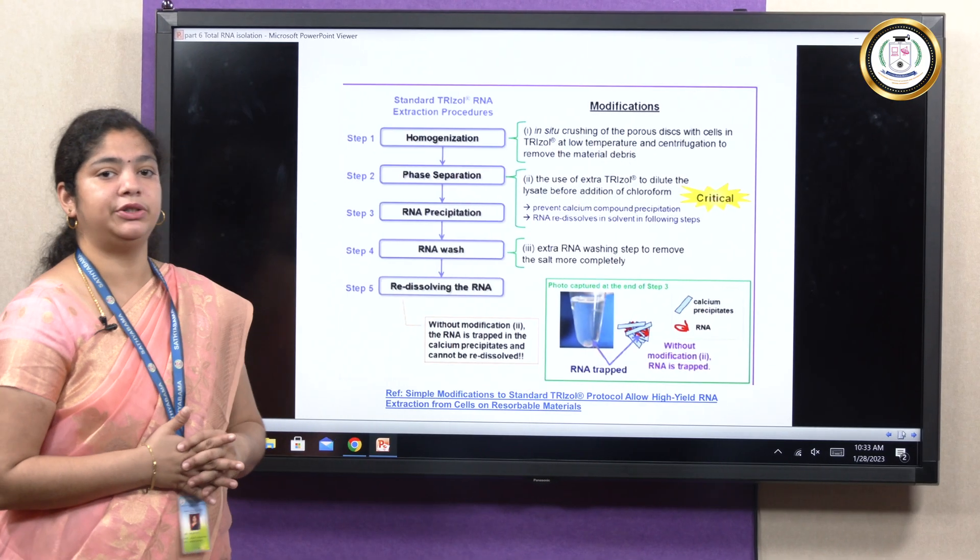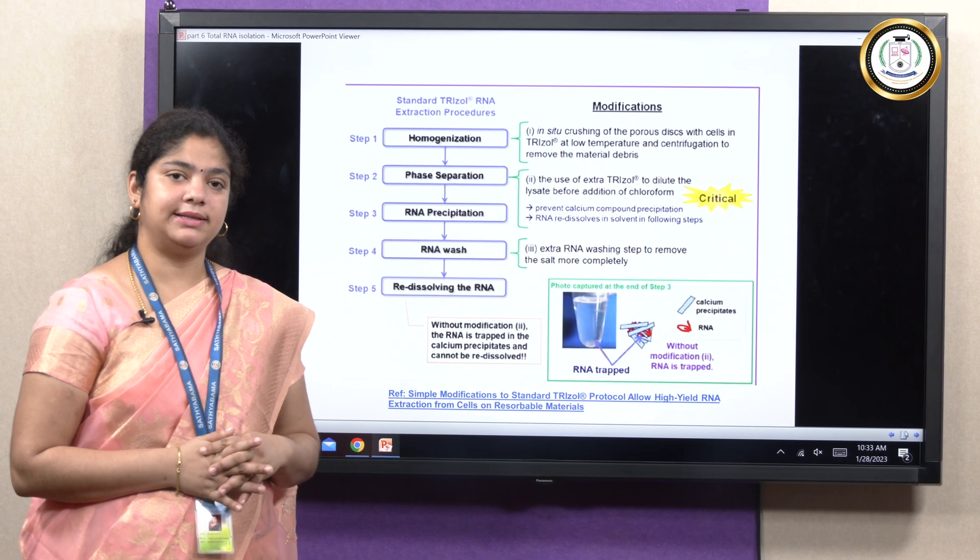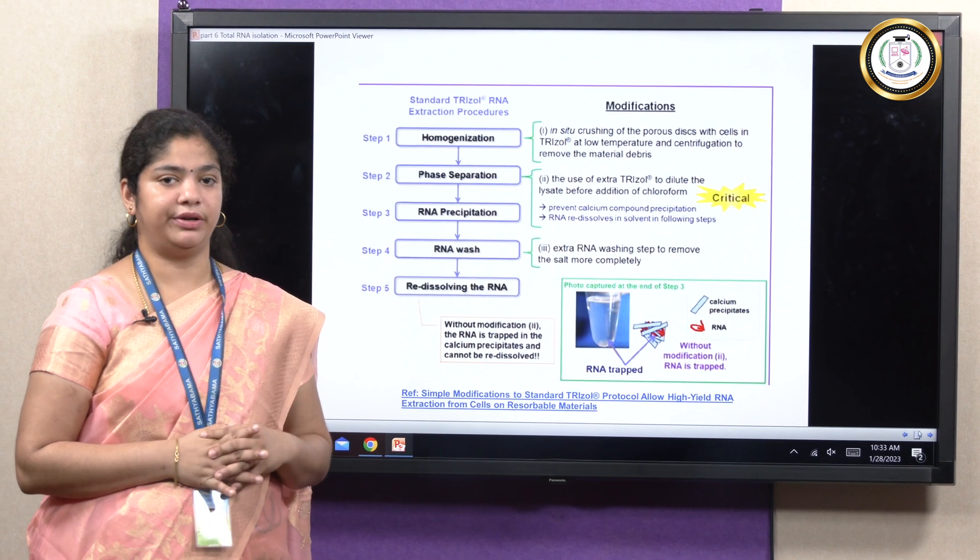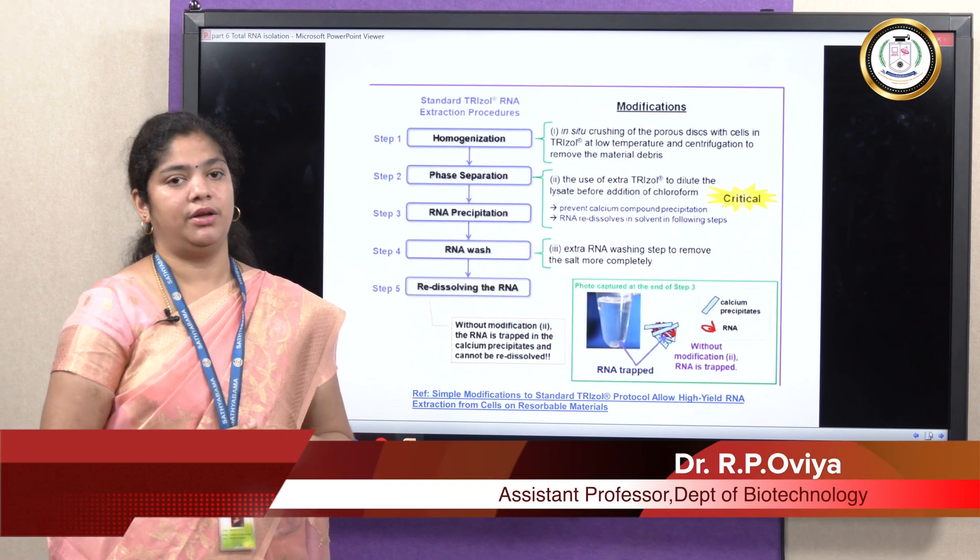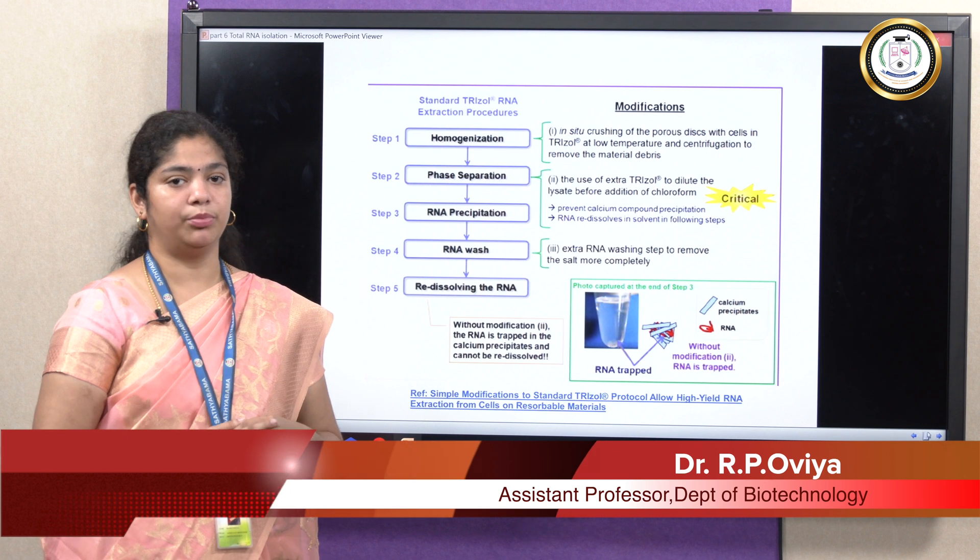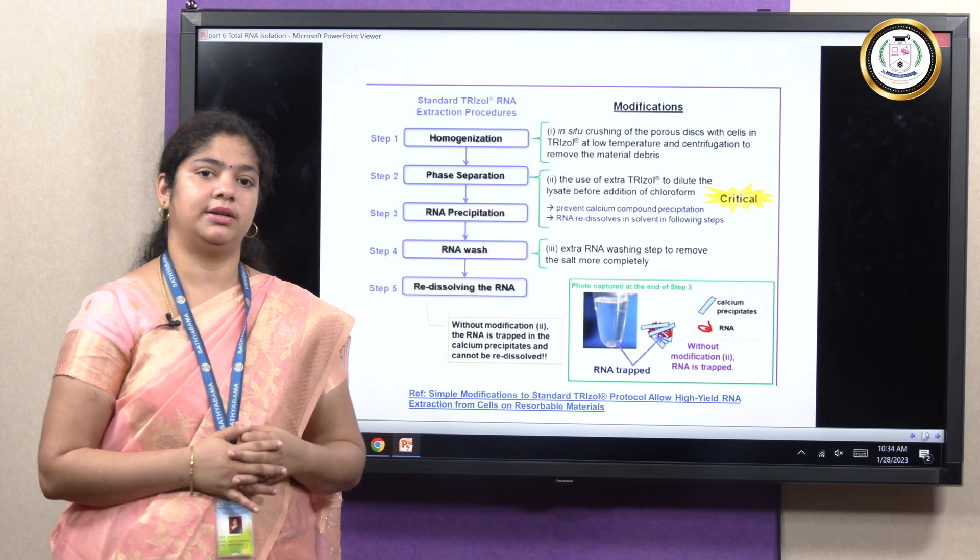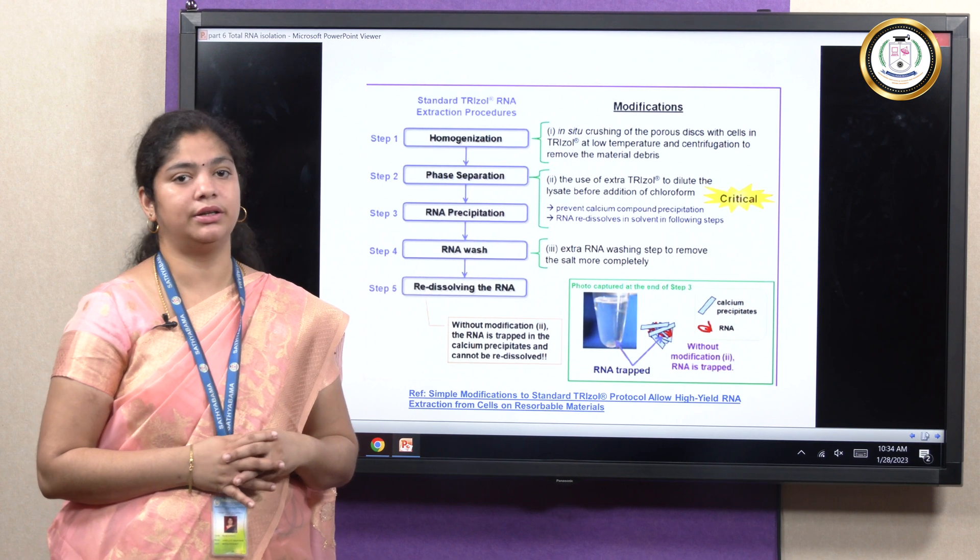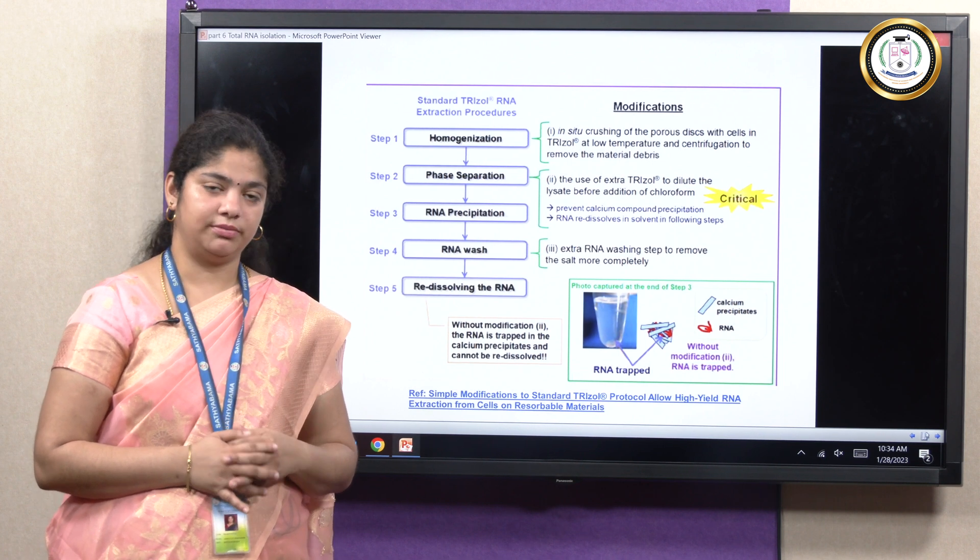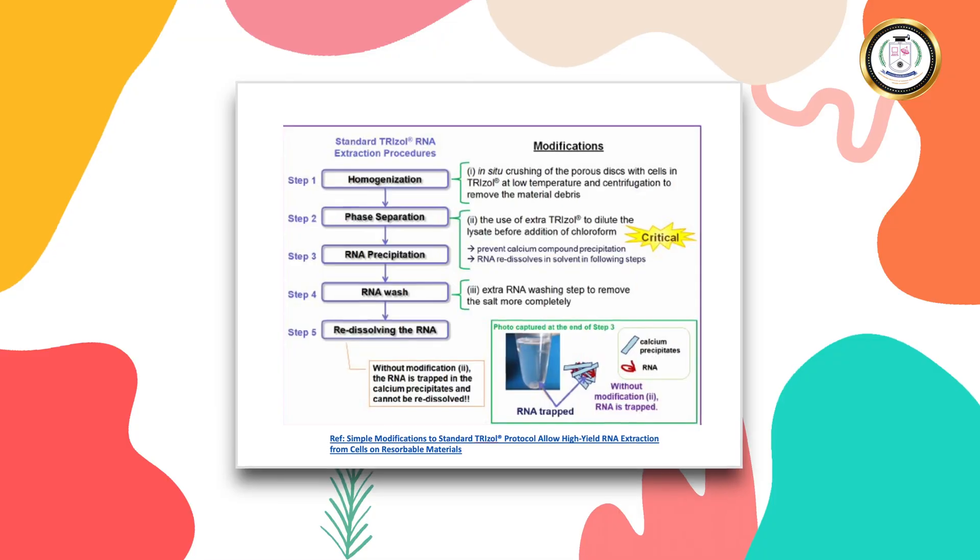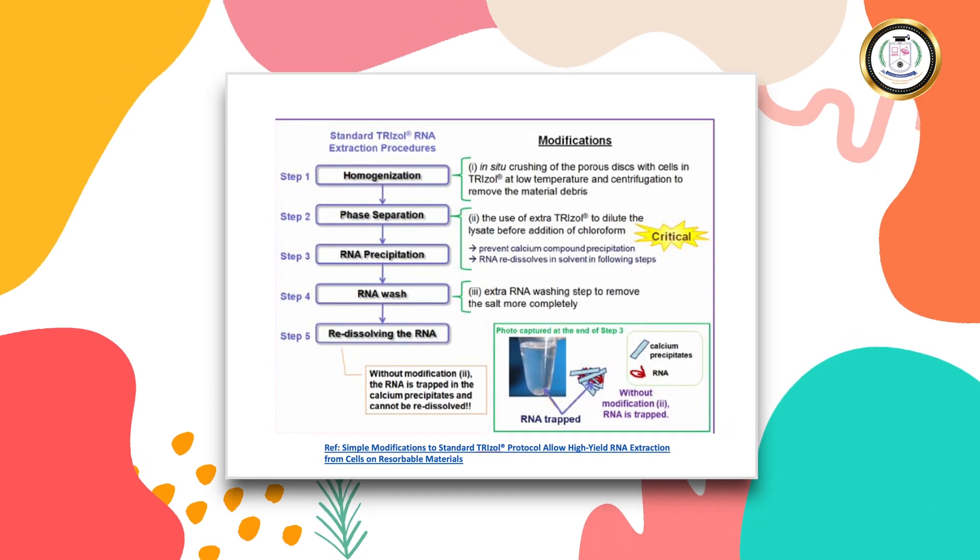So how do you obtain the total RNA? We need to lyse the cells and the lysing can be different for different sources. If it is a plant source, it needs more methods, whereas when it is a cell culture, the cells are very delicate and it is much easier to isolate RNA from a mammalian cell culture. So depending on the sample, RNA isolation is different.